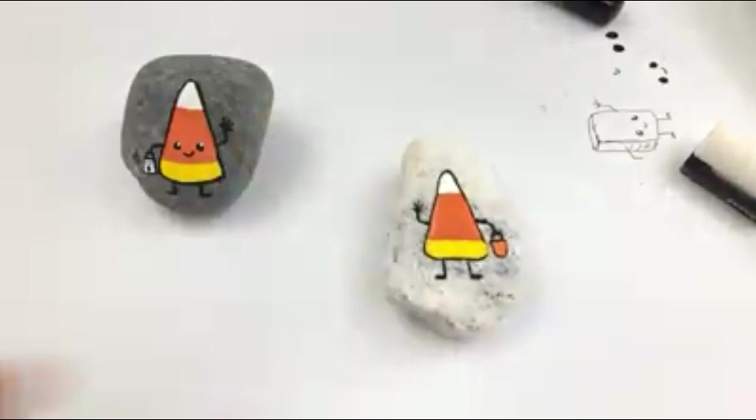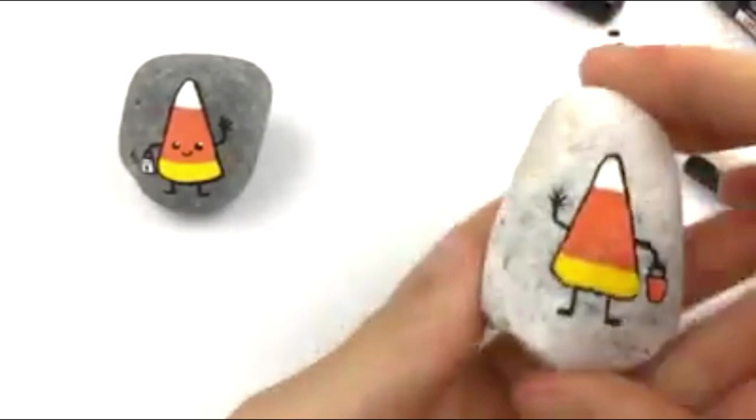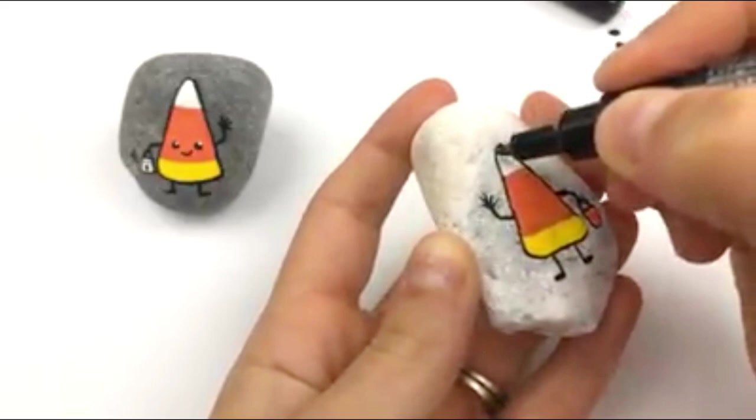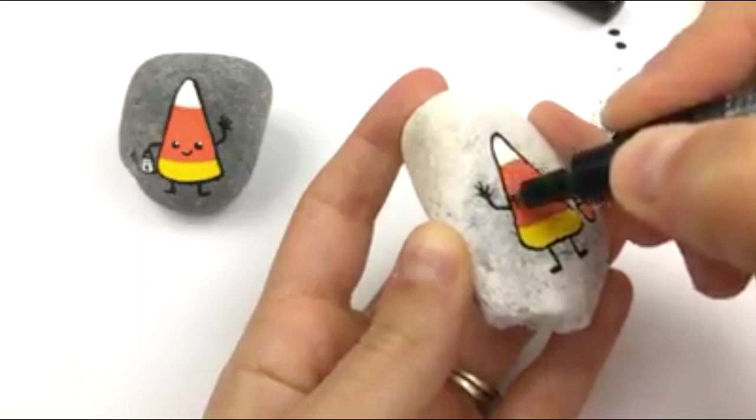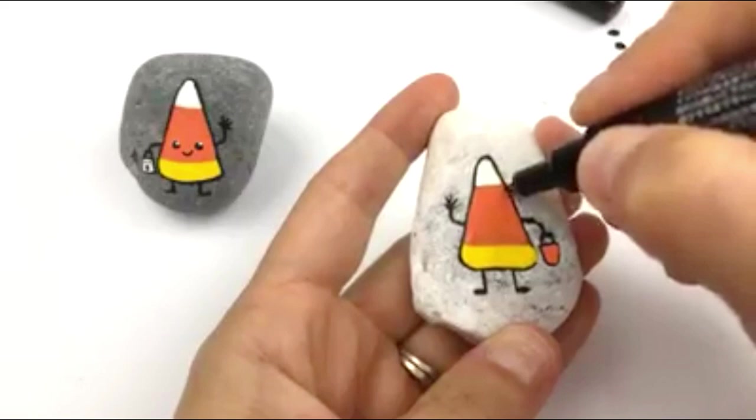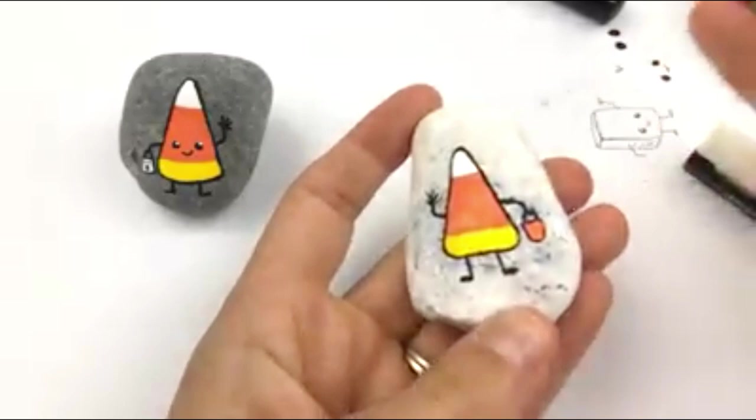Okay. Now, while that's drying a little bit, what we can do is go along the outside of the actual candy again, just to give it a nice crisp edge. Some places it might have gotten a little bit of color onto your outline. Like so. And the outline of our bag here too.